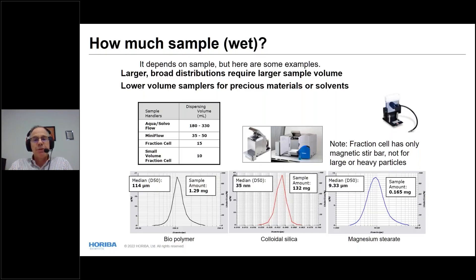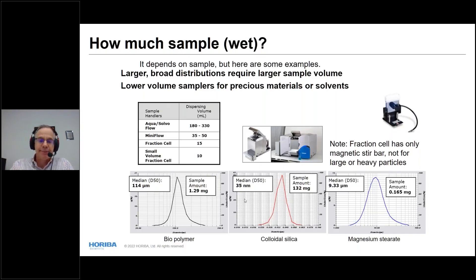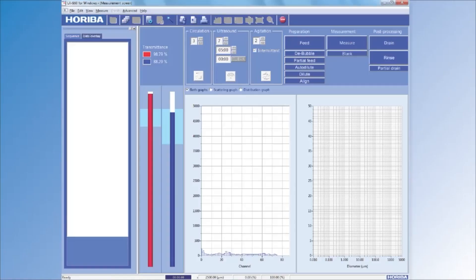How much material do you need? It depends. For large broad distributions you need more material; for narrower or smaller particle sizes, low-volume samples conserve material. Dispersing volumes range from about 5 to 300 mL. Examples: at 100 microns, about 1 mg of biopolymer; at 35 nanometers, about 0.165 mg of material; at a 10-micron max rate, about 130 mg.